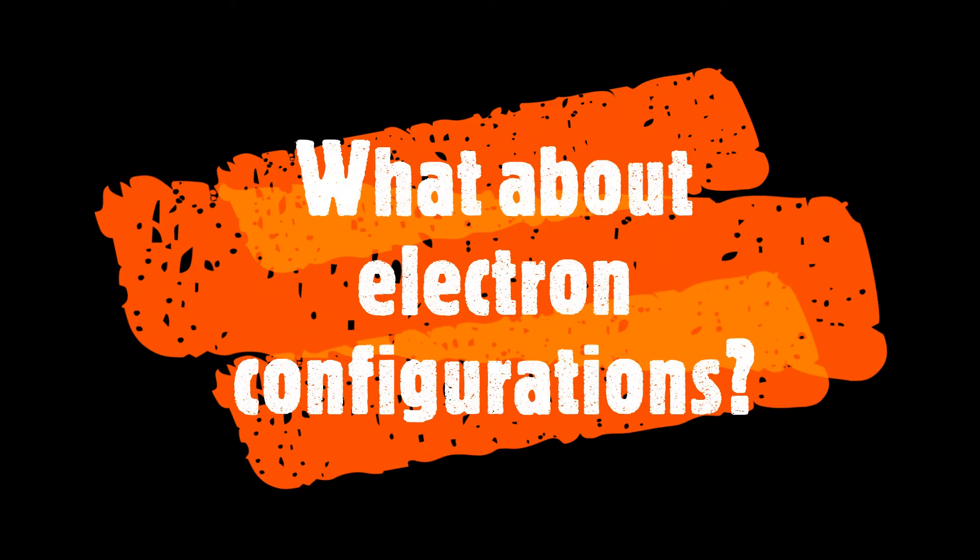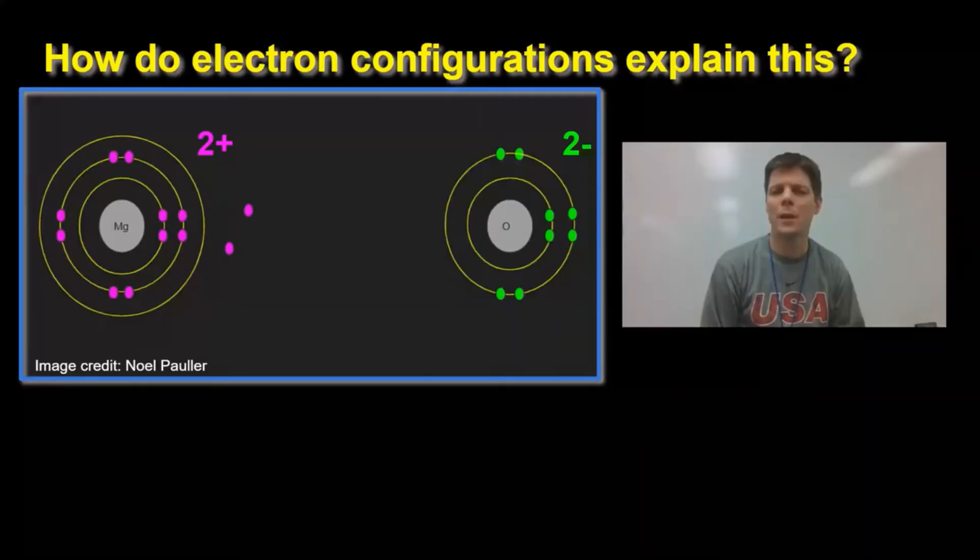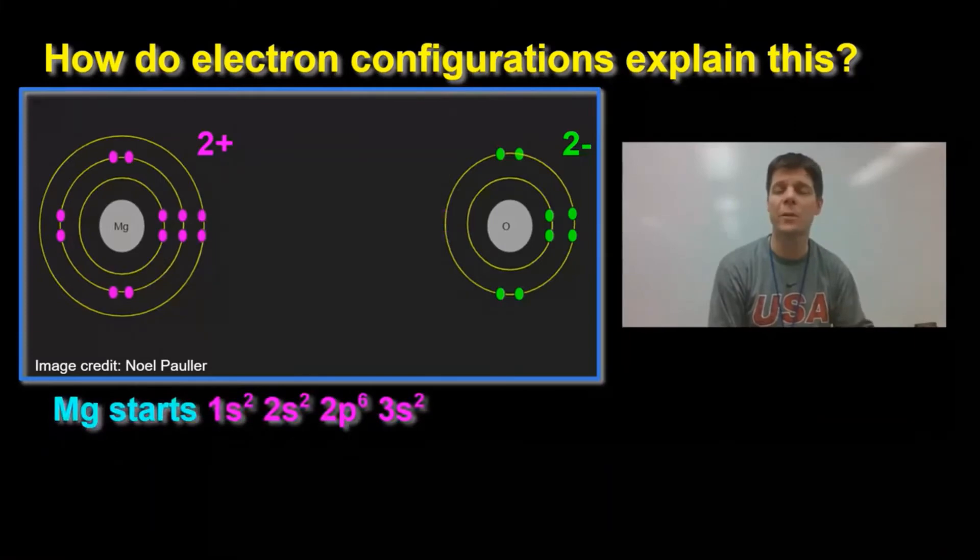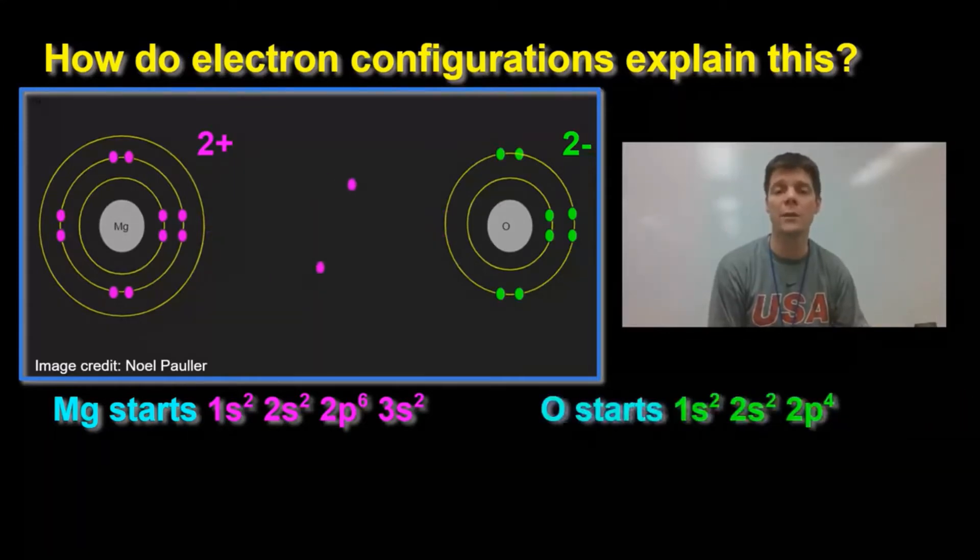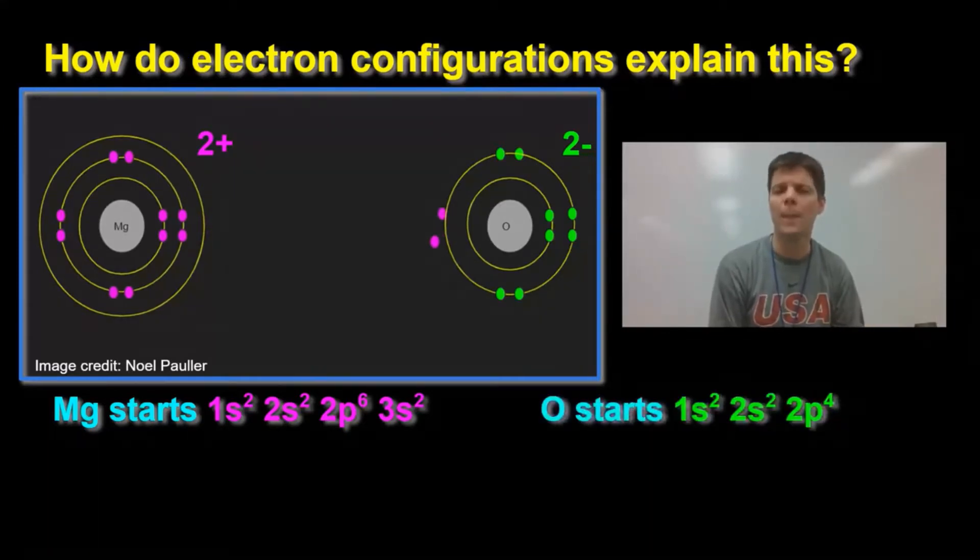How do electron configurations relate to this reaction? So you might be asking how electron configurations factor into this reaction we're talking about in this video. Magnesium atoms start with an electron configuration of 1s2, 2s2, 2p6, 3s2. Oxygen atoms have an electron configuration of 1s2, 2s2, 2p4.